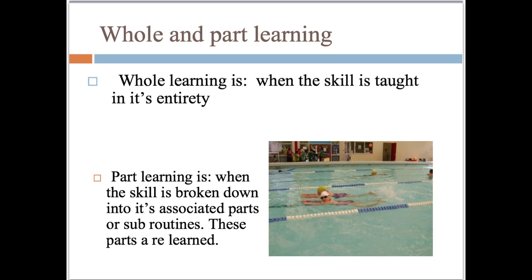Part learning is when the skill is broken down into its associated parts or subroutines, which are then learned individually. An example of part learning in the same context would be to break down the different subroutines and teach them individually: kicking, breathing, body position, and arm technique. These can all be taught separately and contribute to the development of the whole skill. Pause the video now and list the advantages of whole learning and the advantages of part learning.